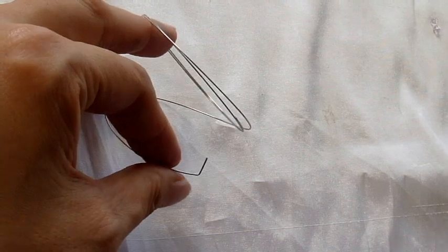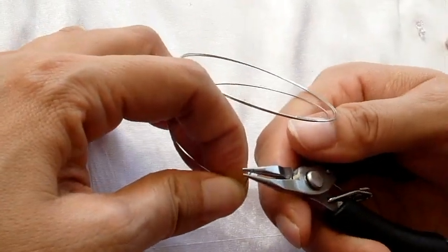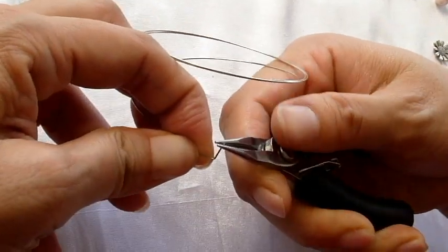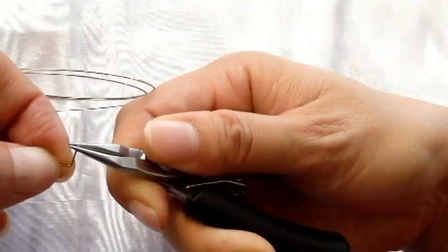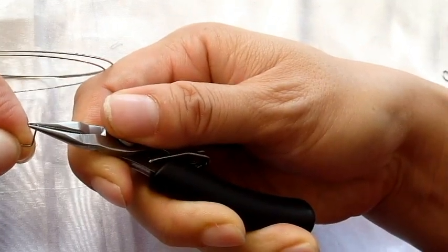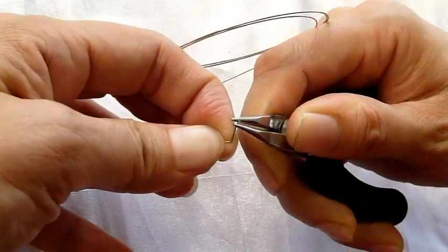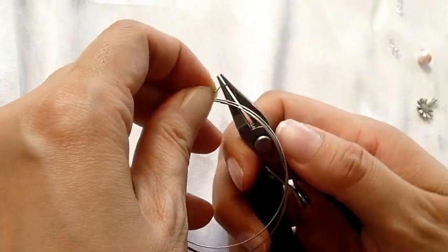With a flat nose plier, and now use your round nose pliers, place it at the tip and hold your pliers with your palm upwards. Now turn your wrist inward to make a loop.